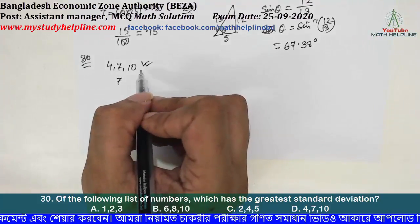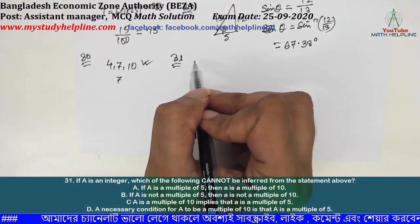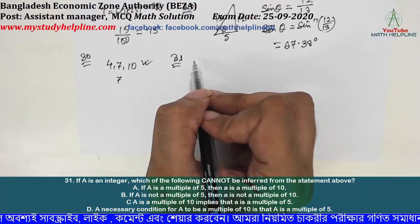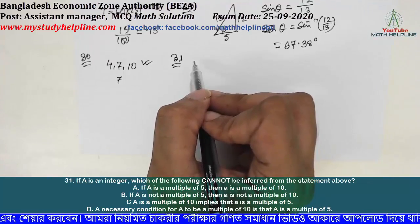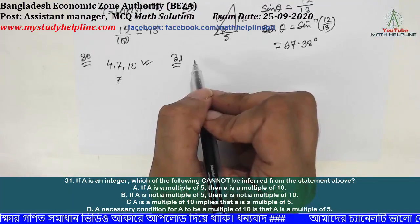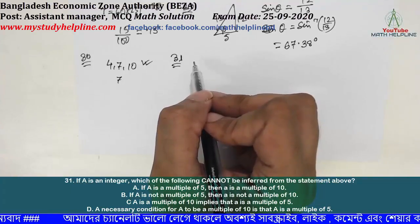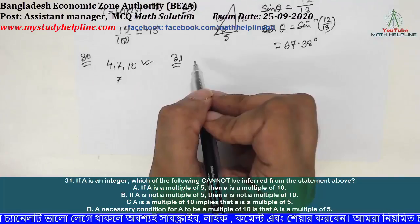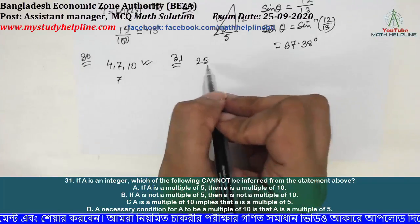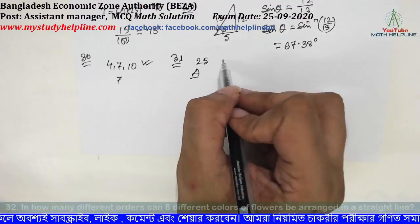Number 31: if a is an integer, which of the following cannot be inferred from the statement above? If a is a multiple of 5, then a is a multiple of 10. This is evaluated to determine which inference cannot be drawn.